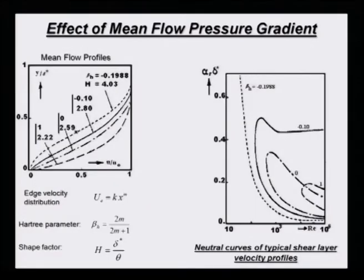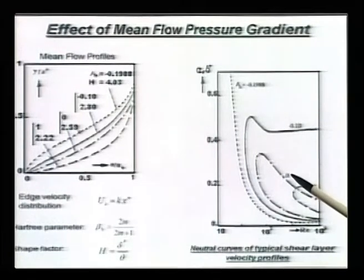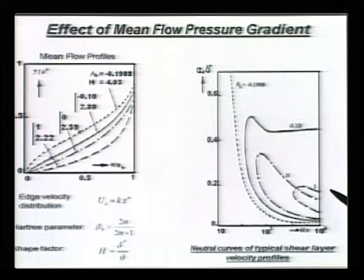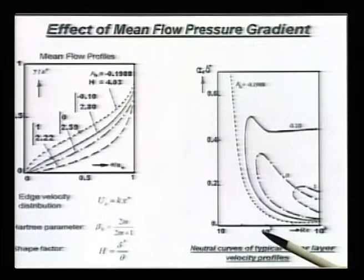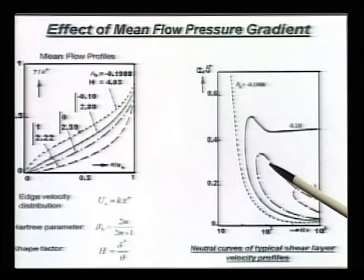We can draw the neutral curve for various kinds of velocity profiles. One standard reference neutral curve corresponds to the Blasius profile, that is beta_h equal to 0. If I take the stagnation point profile, the neutral curve is like this. Please note this is on a log scale - this is 10, this is 1000, this is 10 to the power 5. The critical Reynolds number for the Blasius profile was about 519. Look at the stagnation profile - it is very stable because the flow is stable up to such a large extent.